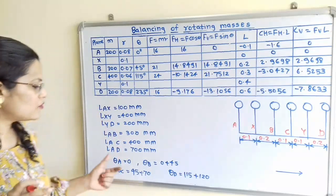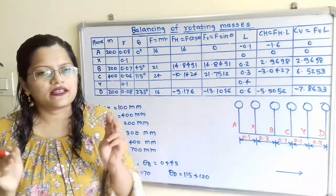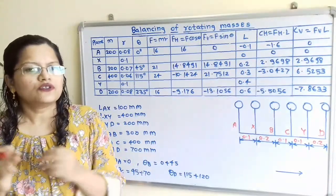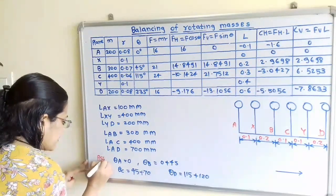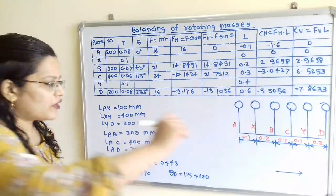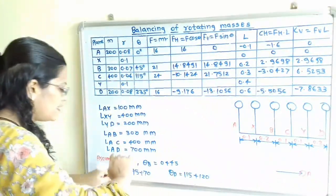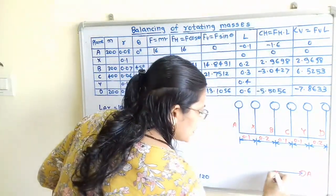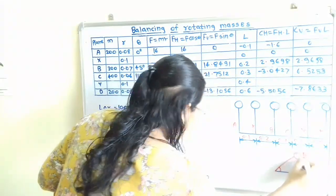We will now move to the angle theta. The angle theta of B with respect to A is mentioned in the question. We will assume theta A is equal to 0°. So the angle for A is 0°. Then the angle for B — with respect to A it is given as 45°, so here the angle for B is 45°.